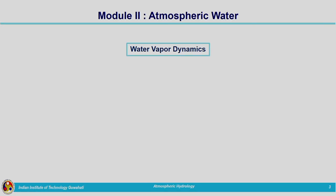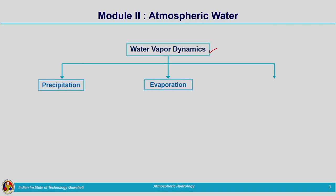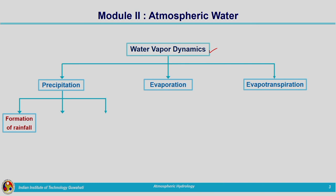How do we get precipitation from the water vapour present in the atmosphere? Let us have a detailed understanding about atmospheric water in this module. We need to understand water vapour dynamics, including precipitation, evaporation, and evapotranspiration. When talking about precipitation, we need ideas about formation of rainfall, measurement of rainfall, and representation of rainfall. Precipitation includes different types, but we mainly depend on rainfall, so we will give more emphasis to precipitation in the form of rainfall.